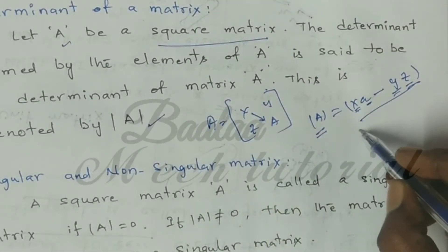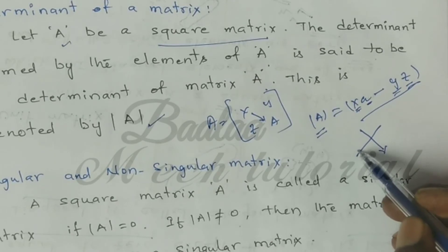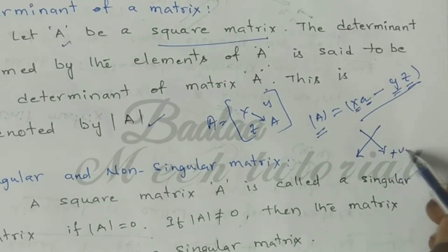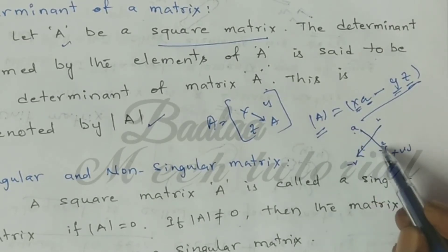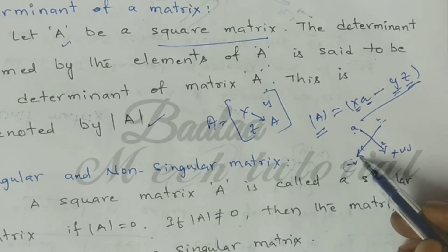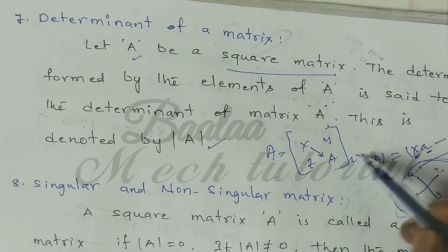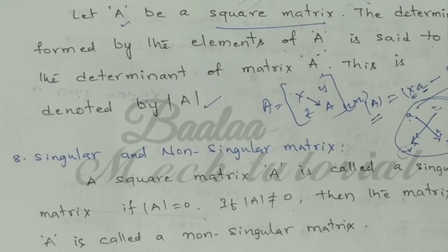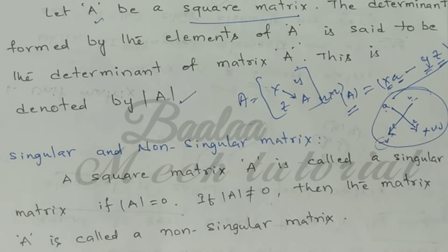For a 2 by 2 matrix with elements A, B, C, D — the determinant is A times D minus B times C, where one diagonal direction is positive and the other is negative. This applies to 2 by 2, 3 by 3, and 4 by 4 matrices, and will be discussed in more detail in a later class.